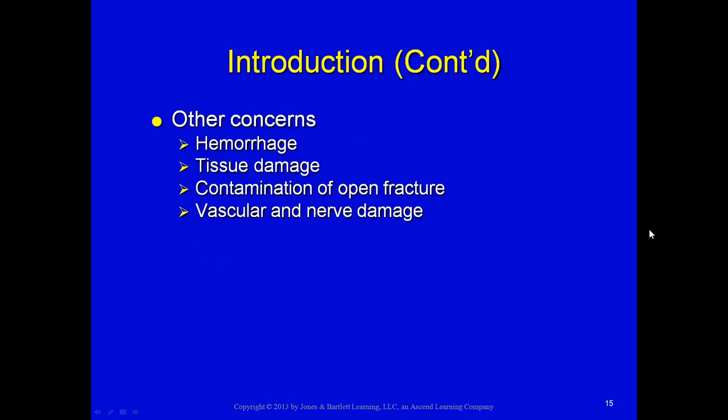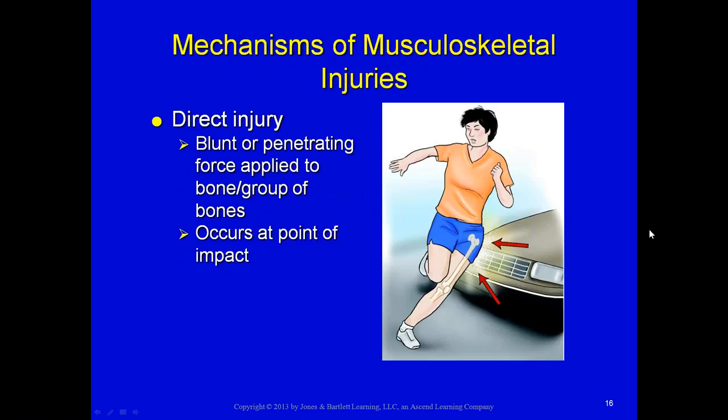Some concerns with musculoskeletal trauma: depending on what bone is fractured, hemorrhage may be an issue. For example, bilateral open femur fractures — the hemorrhage inside each of those muscles could be significant enough to cause shock. Tissue damage from sharp bone ends can cause open fractures, which set up infection at the wound site and of the bone itself. Because a nerve, artery, and vein follow along every bone, there could be both vascular and nerve damage.